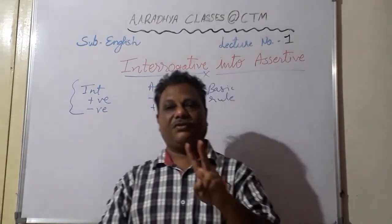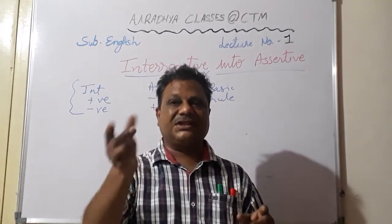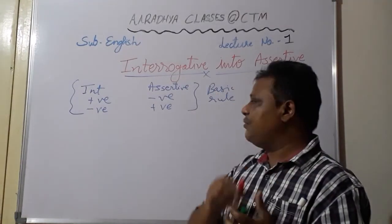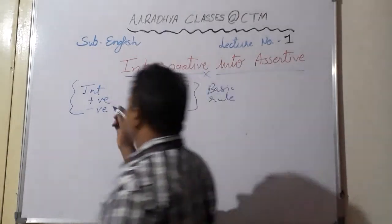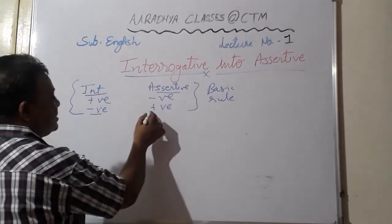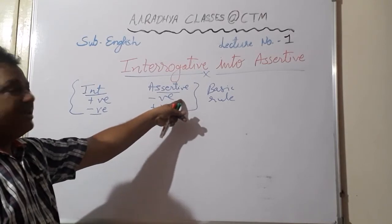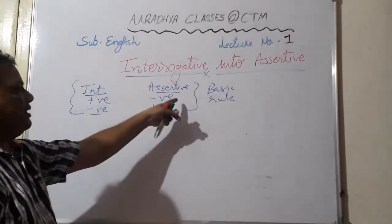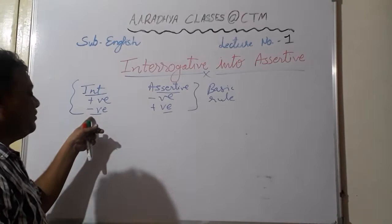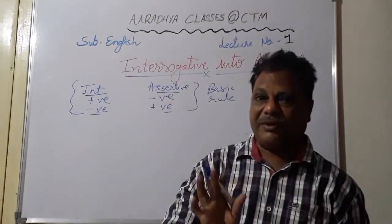In a question tag, you add only two words. While making an interrogative sentence, you change the entire given sentence into a question. The basic rule here is the same: when the given interrogative sentence is positive, its assertive is negative, and when the interrogative is negative, its assertive is positive. Conversely, if the assertive is negative, its interrogative will be positive, and if assertive is positive, its interrogative will be negative.